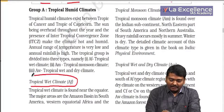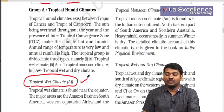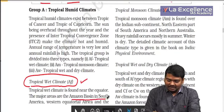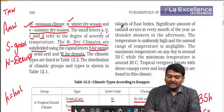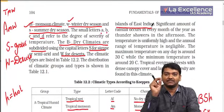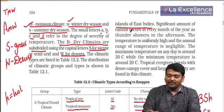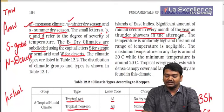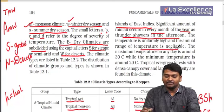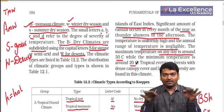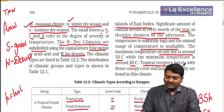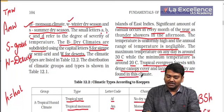Tropical wet climate (AF) is found from 0 to 5 degrees north and south — the Amazon basin in South America, western equatorial Africa, and islands of the East Indies. A significant amount of rainfall occurs every month, with thundershowers in the afternoon around 4 o'clock. Temperature is uniformly high with negligible annual range — maximum around 30 degrees, minimum 20 degrees. Tropical evergreen forest with thick canopy cover and large biodiversity is found in this climate.